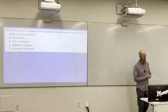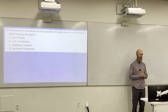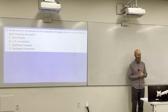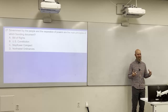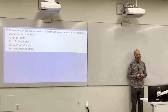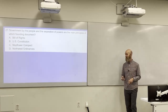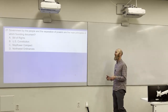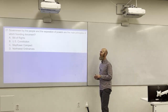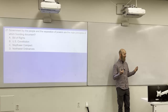Government by the people and separation of powers are the main principles of which founding document? A: Bill of Rights. B: U.S. Constitution. C: Mayflower Compact. D: Northwest Ordinance. The answer is B — the Constitution. Government by the people could apply to the Declaration of Independence too, but separation of powers combined with government by the people points specifically to the Constitution.